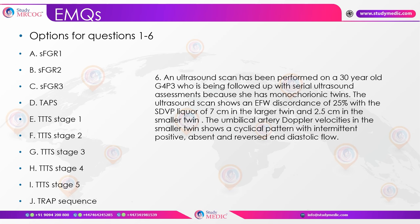EMQ case 6: A 30-year-old gravida 4 para 3 with monochorionic twins at 35 weeks shows EFW discordance of 25%, SDVP liquor of 7 cm in the larger twin and 2.5 cm in the smaller twin — not qualifying as oligo-poly — and a cyclical pattern of umbilical artery Doppler with intermittent positive, absent, and reversed flow. This is sFGR Stage 3.